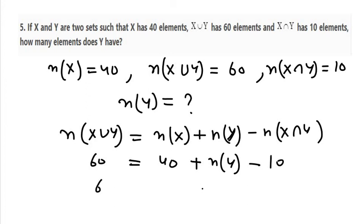So rearranging all the values, we get 60 minus 40 plus 10. So 60 minus 40 is 20, 20 plus 10 is 30. So n(Y) is 30 in this case. So these are question number 4 and question number 5.